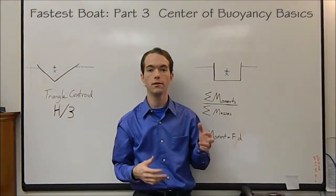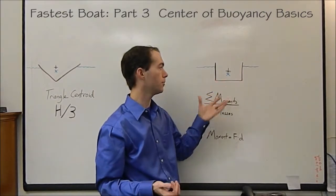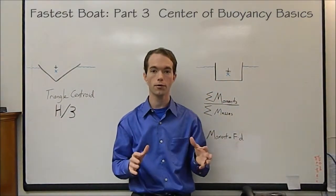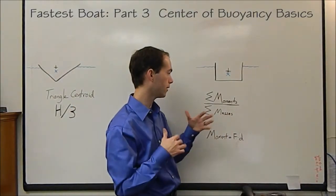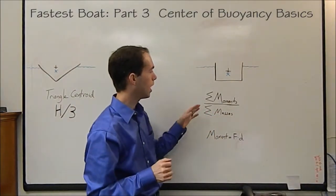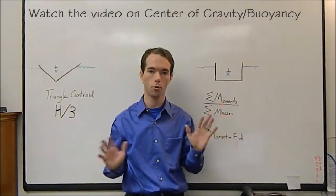So finding center of buoyancy is exactly like finding center of gravity. Once you know your whole shape, you can figure out where the center of all the water is, and add them all up, and then divide by the total mass, and you're good. So I'm going to go ahead now and set up an example. We'll work it. I'll show you how this actually all plays out.